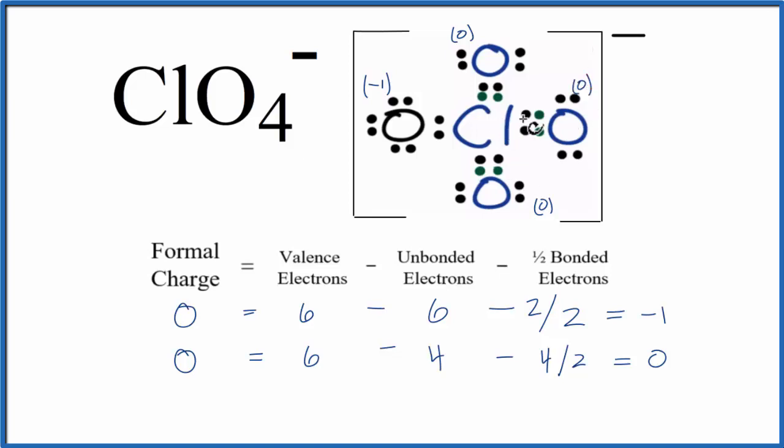Finally, we'll find the formal charge on the chlorine in the center of the Lewis structure. Chlorine is in group 17, sometimes called 7A, with 7 valence electrons. We'll subtract the unbonded valence electrons. For chlorine, they're all involved in chemical bonds with the oxygen atoms, so we don't have any.